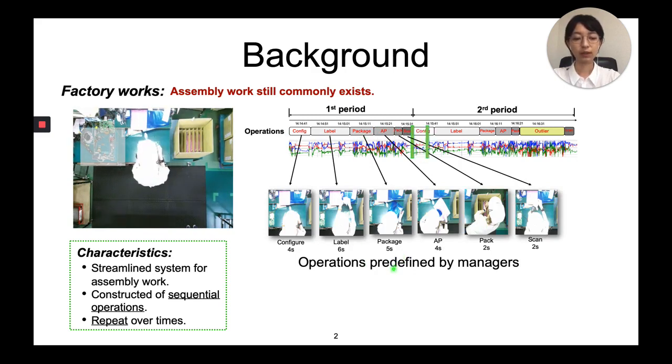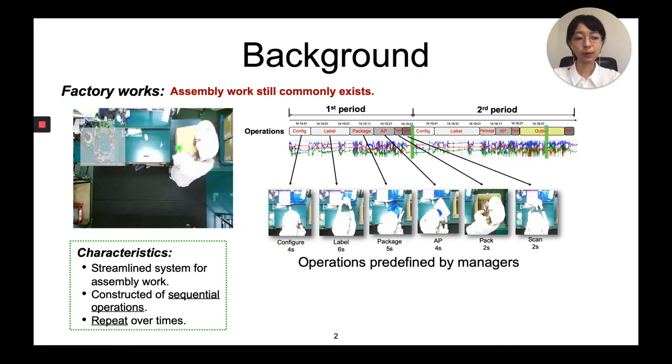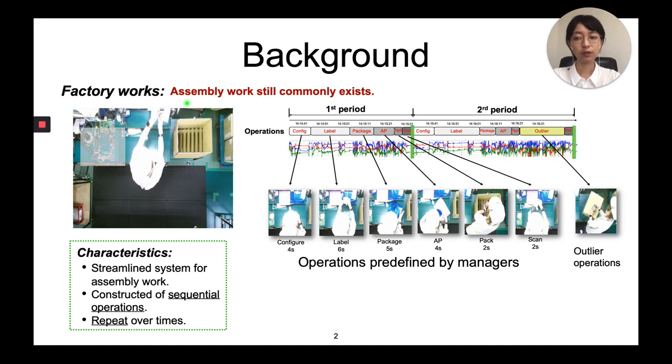Mostly, workers keep repeating these series of operations over and over again, while sometimes the worker will also do other operations, such as packing the box after it was full. And these undefined operations are called outlier operations.